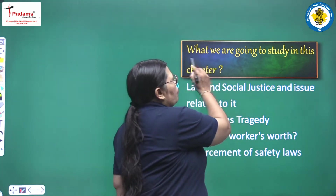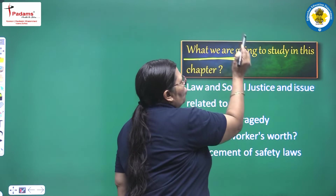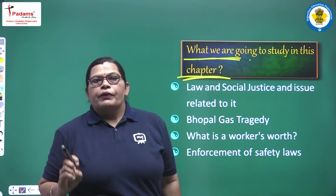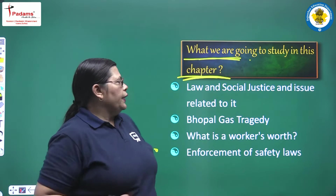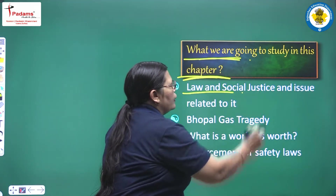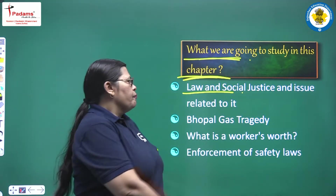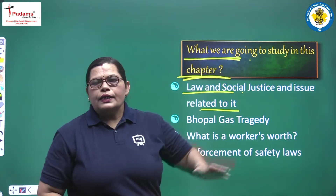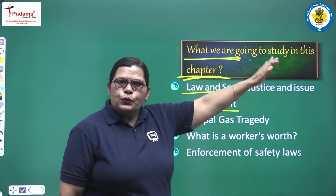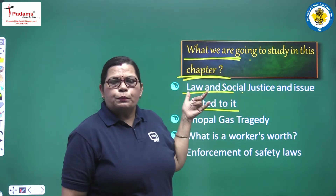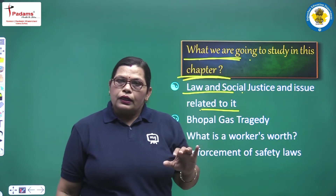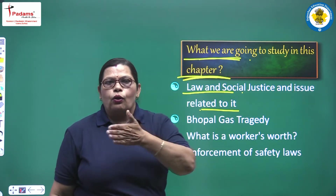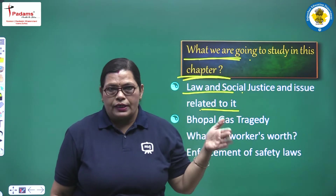So we are covering here what we are going to study in this chapter. First of all, we will explain you about law and social justice and issues related to it. Many issues are there, especially related to consumers and especially related to farmers, etc. — a long chain when we are saying.